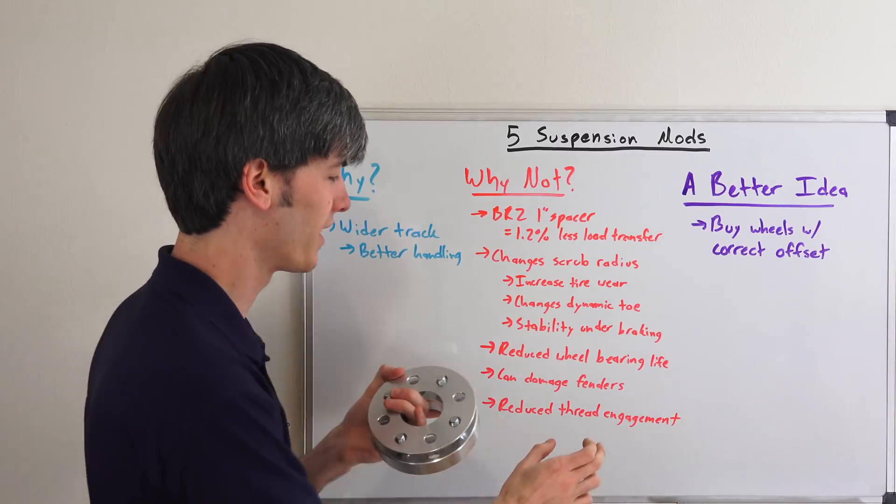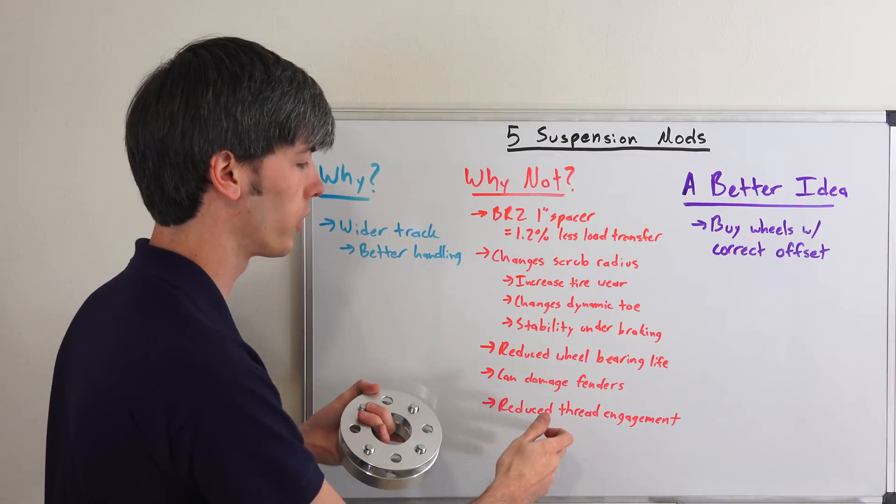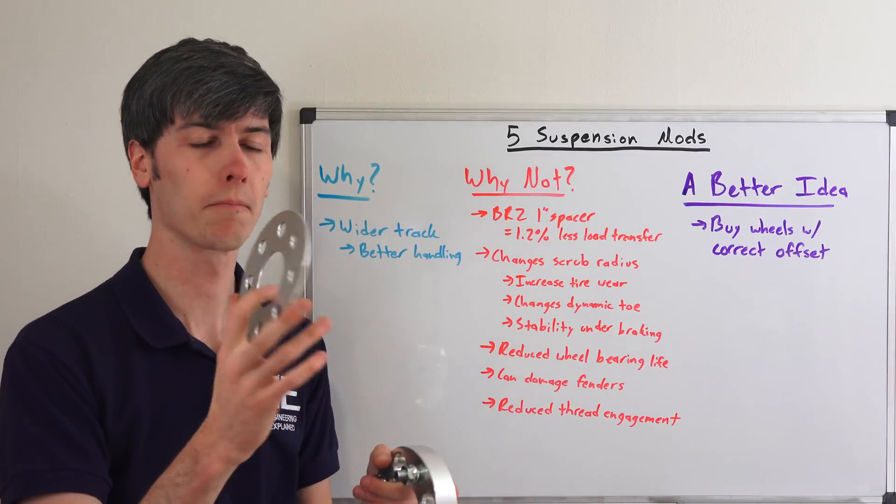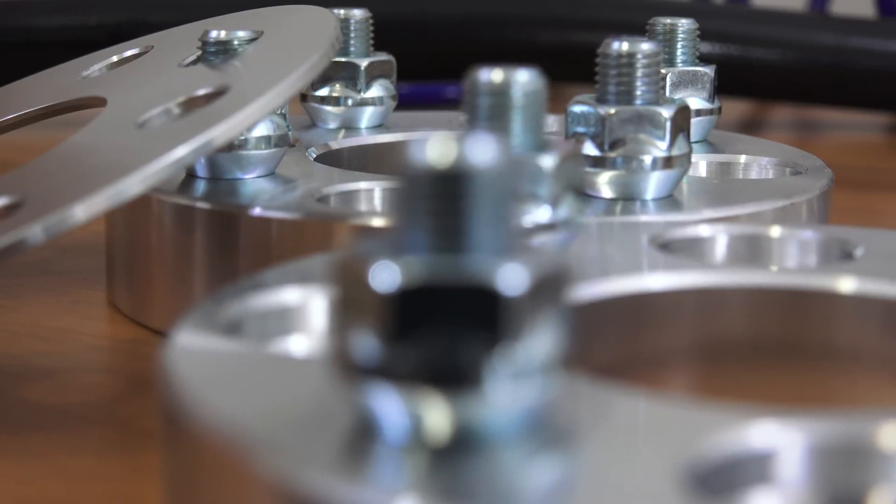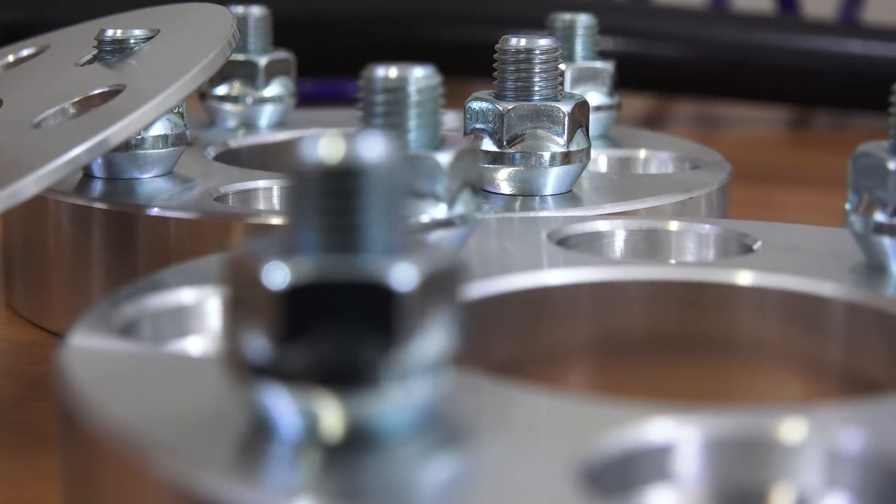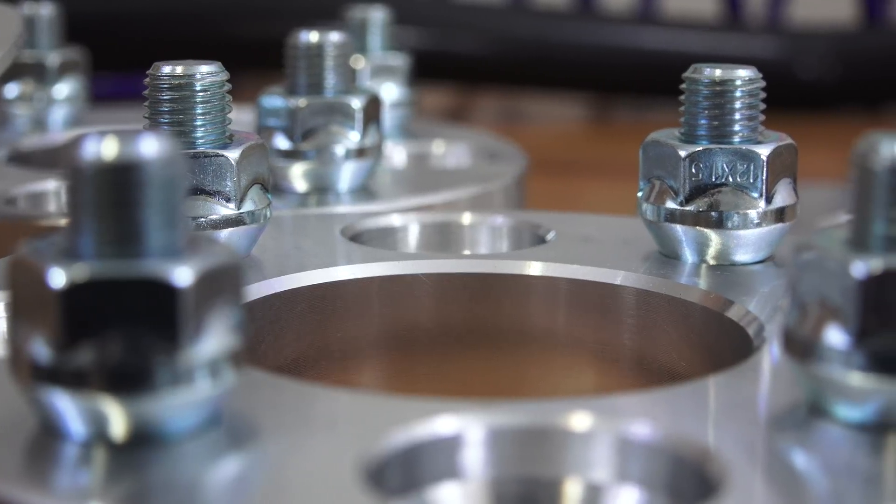You want to make sure, number one, that if you are going to use a wheel spacer, that you don't reduce the amount of thread engagement you have. Let's say you stack a couple of these on there and now you have less threads holding your nut on. You don't want to do that. You want to make sure that lug nut does have full thread to grip onto.